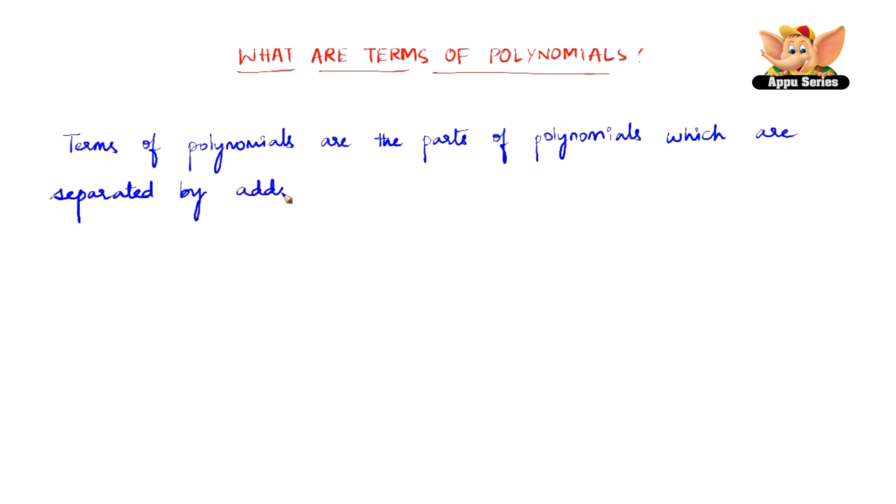Here, let us see what are terms of polynomials. Terms of polynomials are the parts of polynomials which are separated by addition or subtraction.